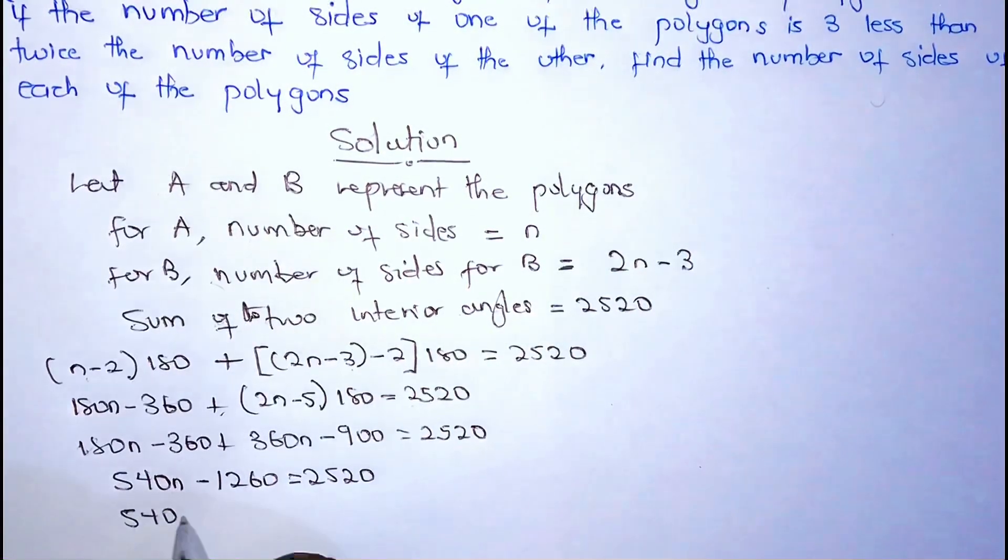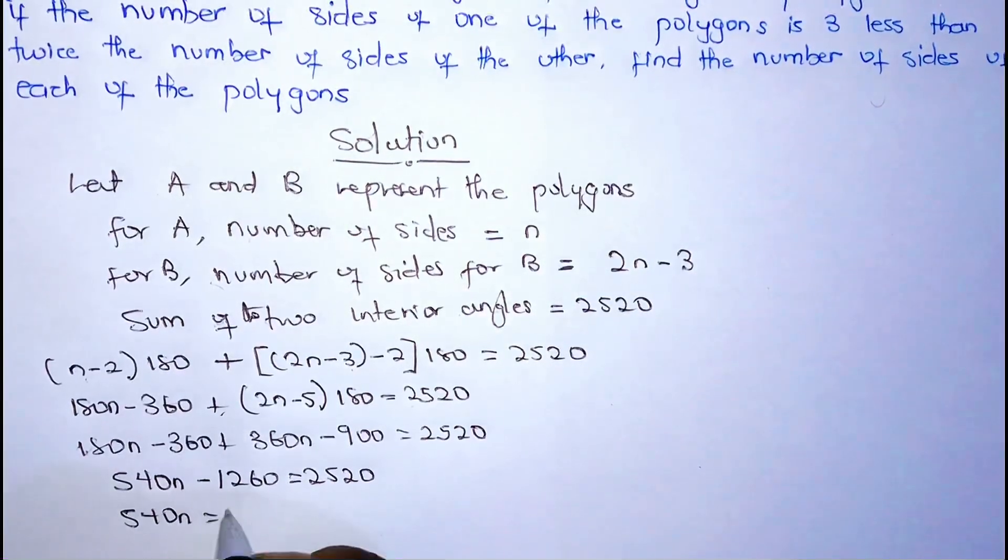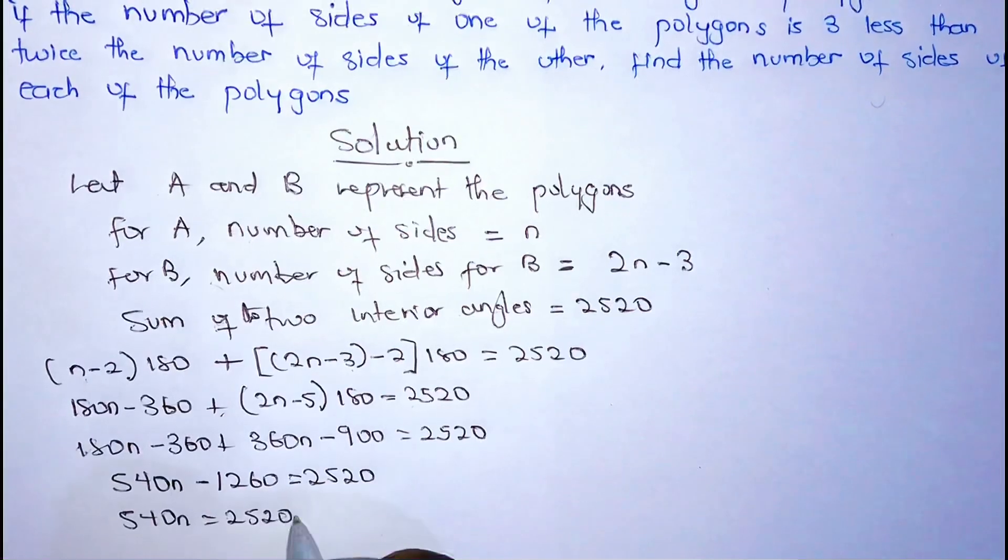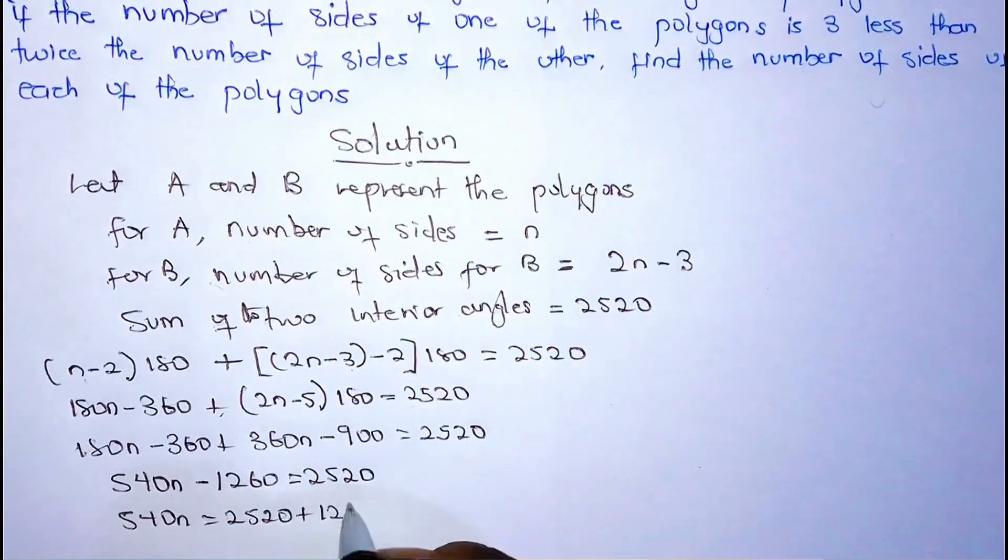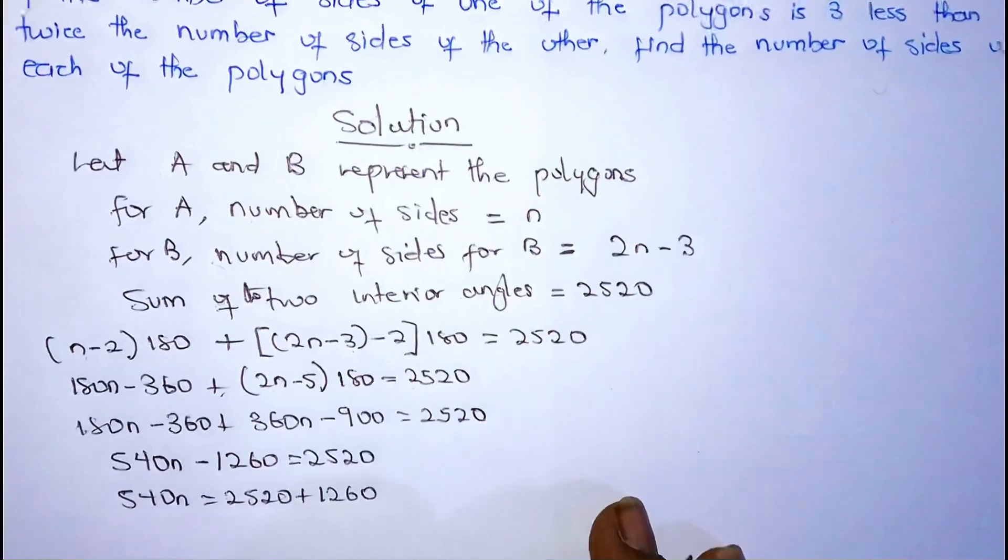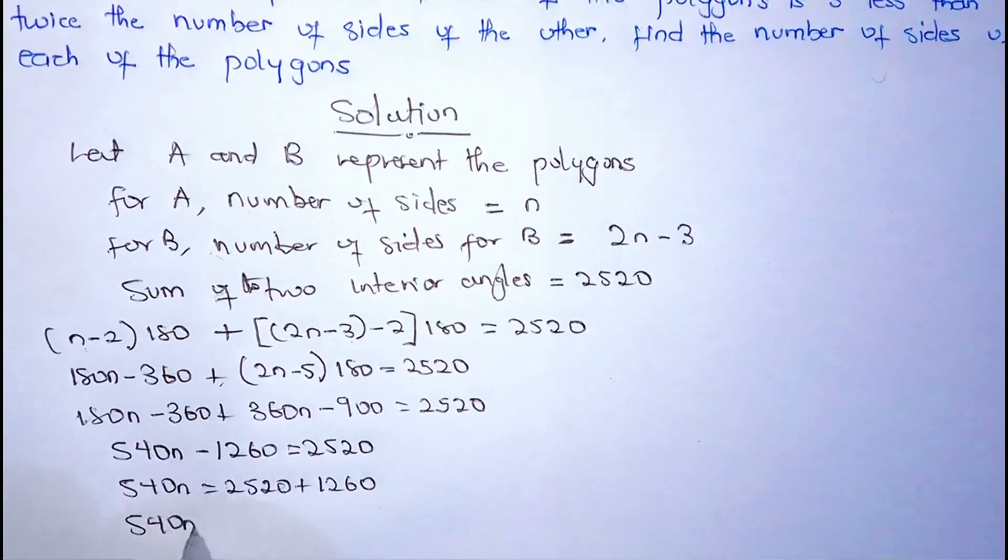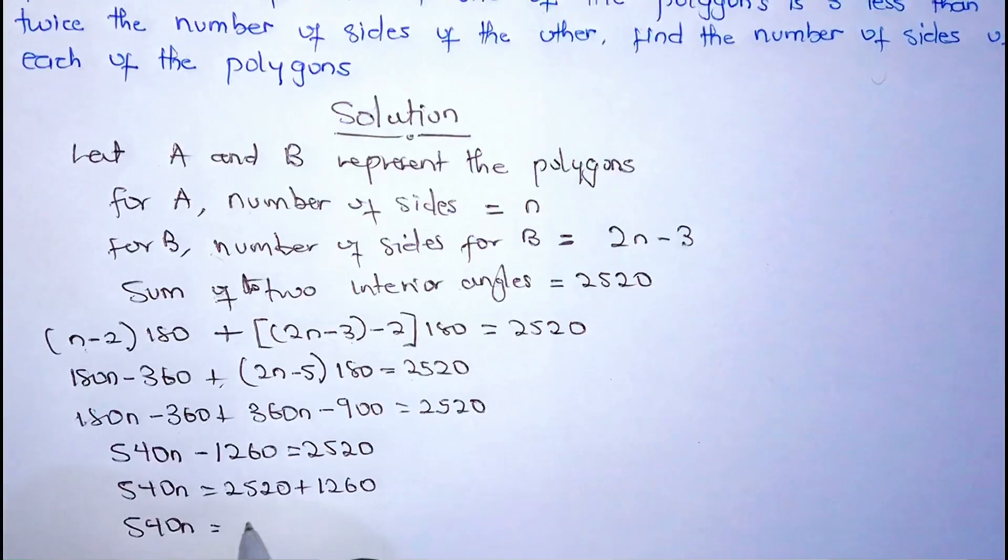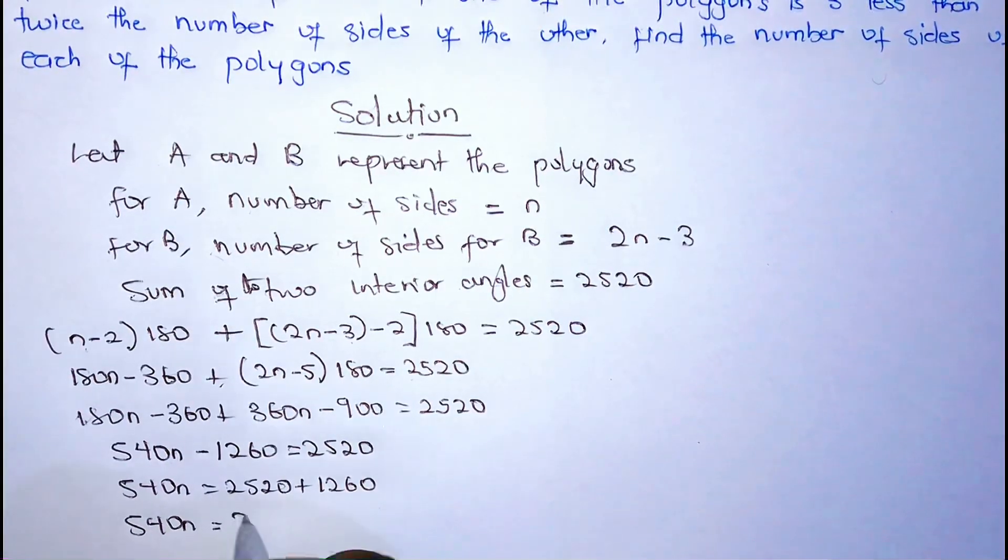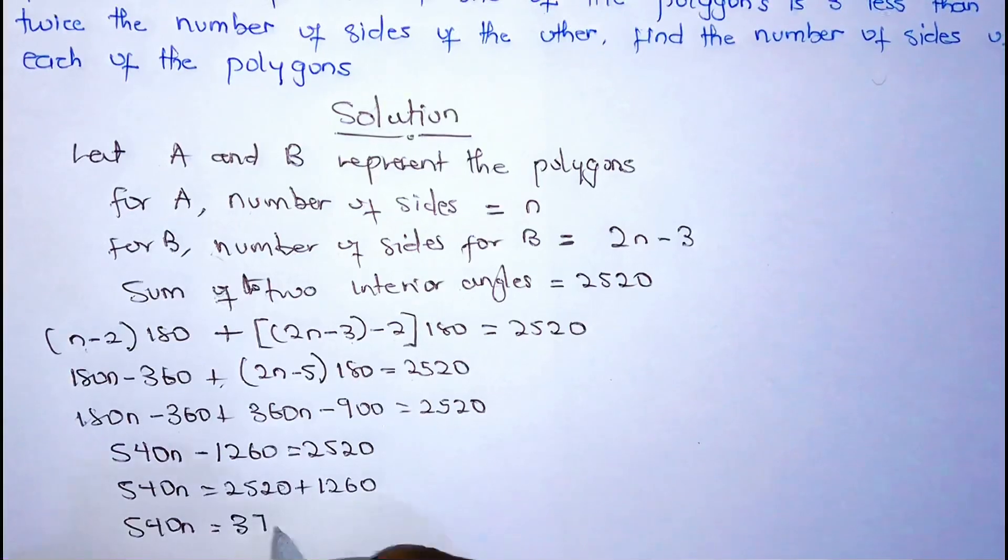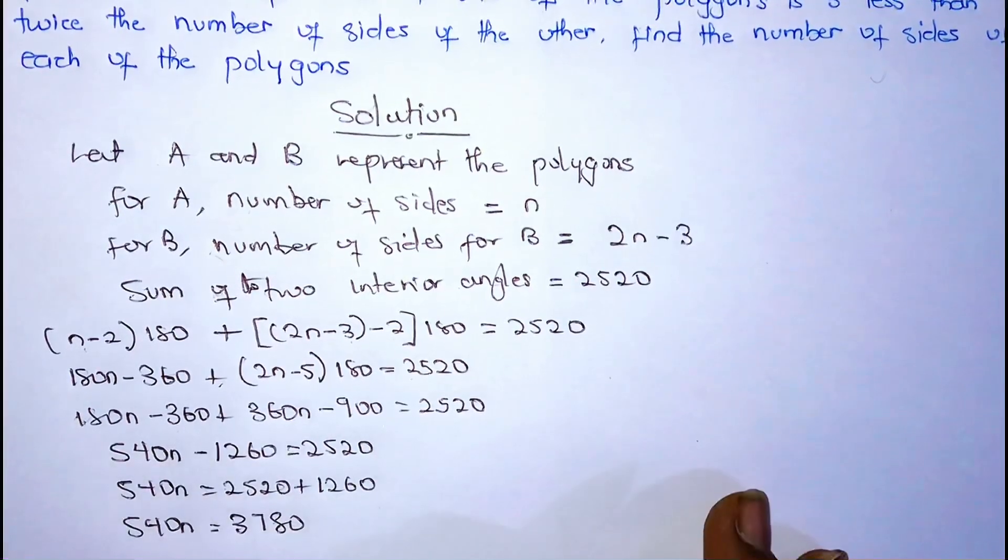So 540N is equal to 2520 plus 1260. So 540N is equal to 3780.